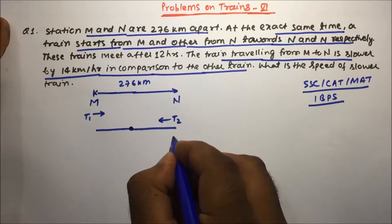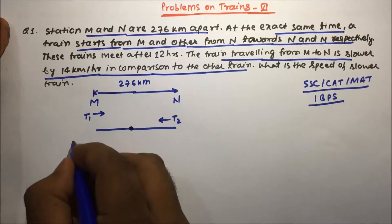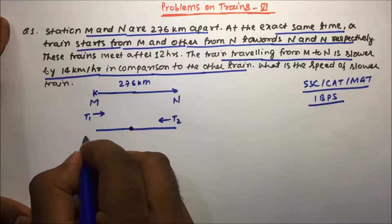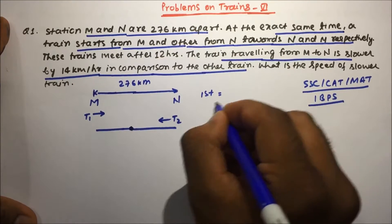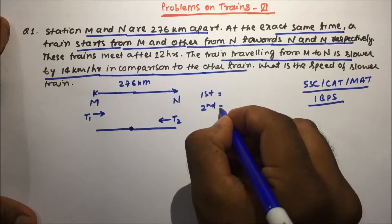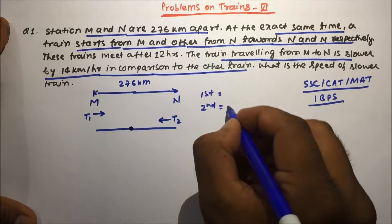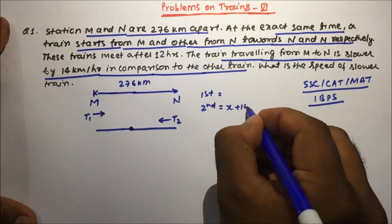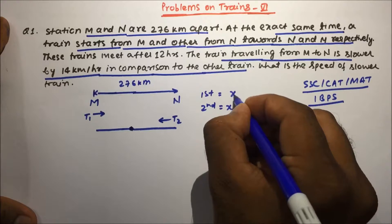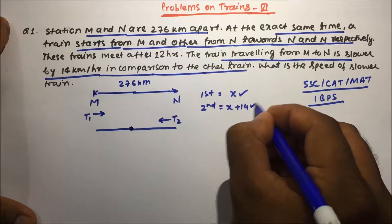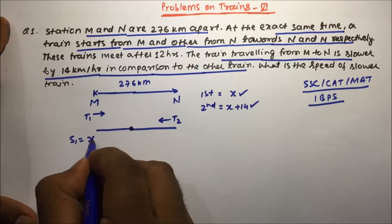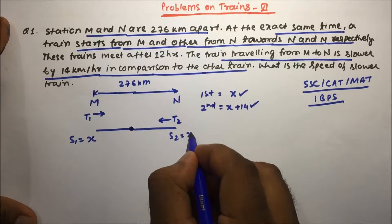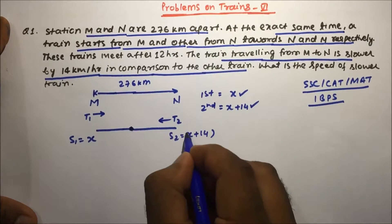Suppose the second train's speed is x+14, then the first train's speed will be 14 km less, which is x. So the first train speed is x and the second train speed is x+14.